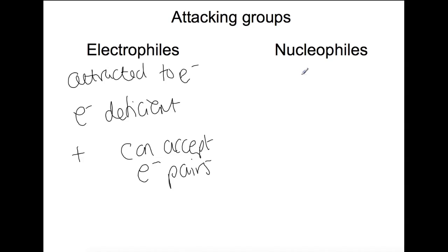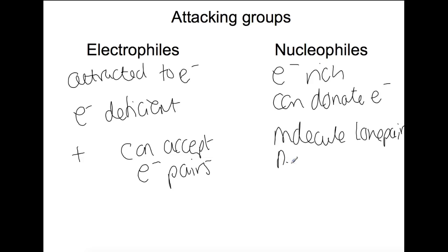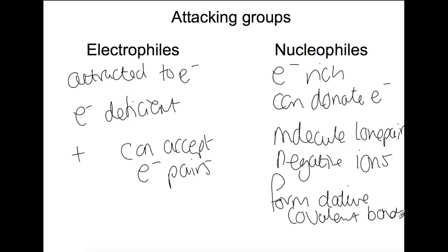Nucleophiles, on the other hand, are electron rich and can donate those, and they are what we would call positive loving. So they are trying to get to the positive charge. So these tend to have lots of electrons. They can donate these electrons to form bonds. And they tend to be molecules with lone pairs or negatively charged ions. And then they tend to form dative covalent bonds. You should remember dative covalent bonds from the transition metal topic. That is where both electrons are provided by one of the atoms within the covalent bond. And these will seek electron deficient areas because they have electrons to donate.